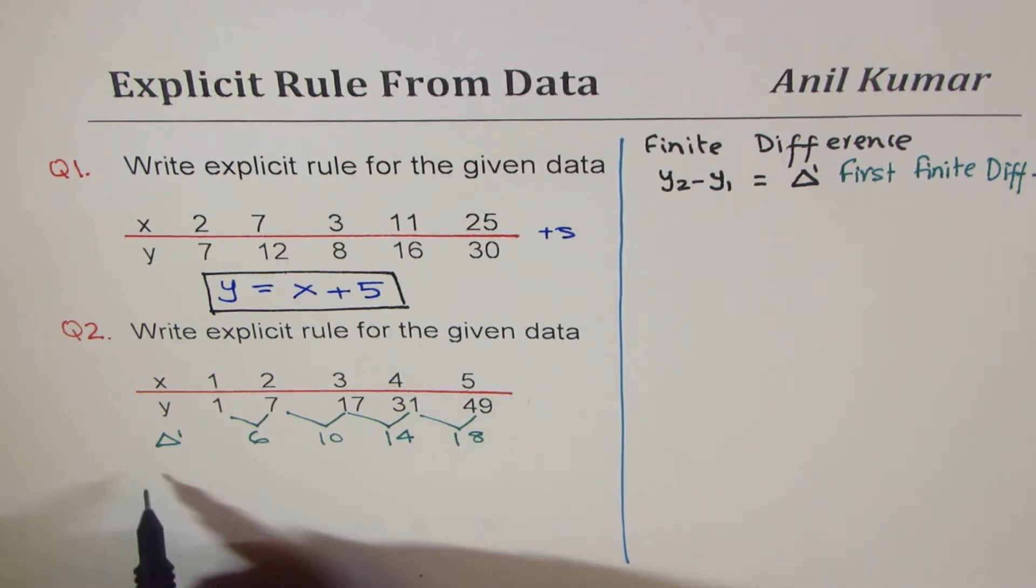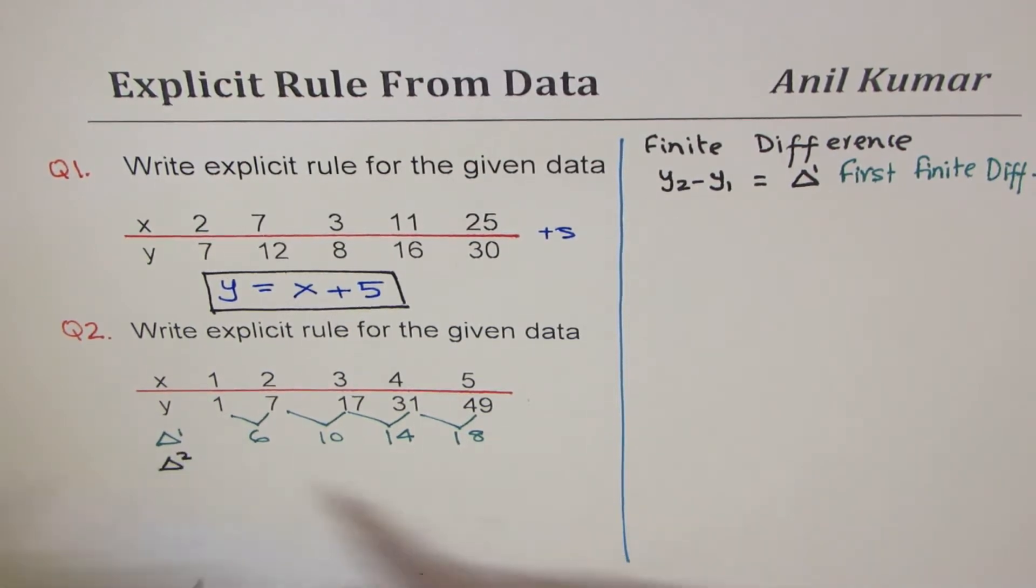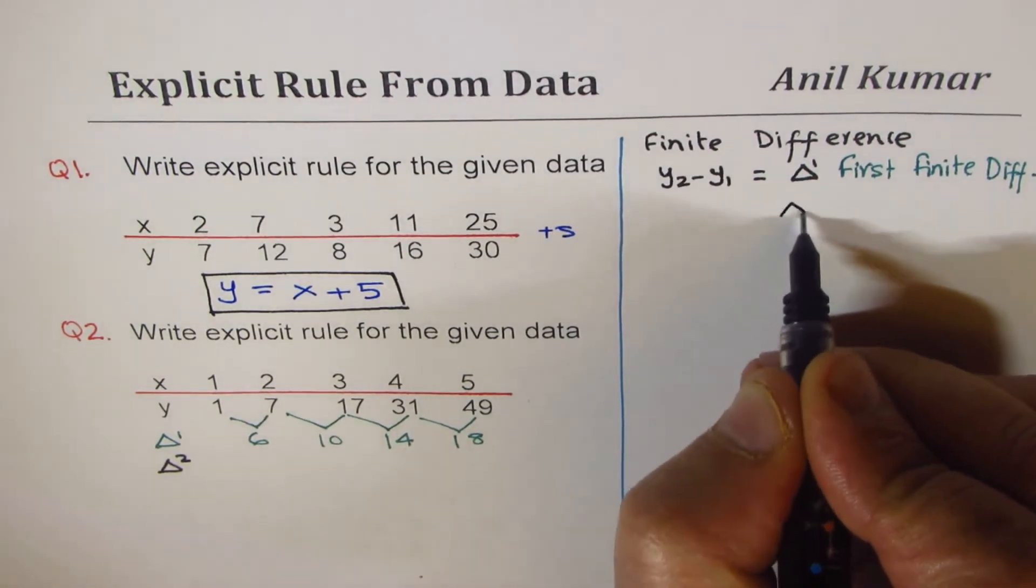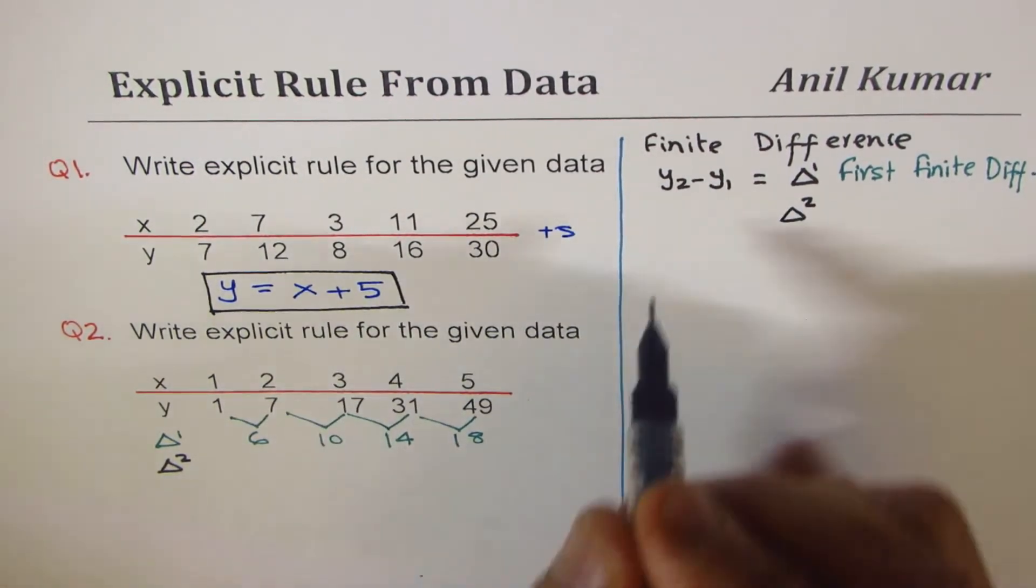So now let's find the second difference. Second difference is repeat this process. Now we'll find the second difference.